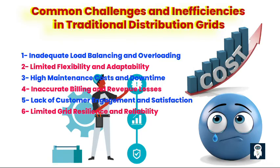Five: Lack of customer engagement and satisfaction. Traditional grids often offer limited interaction and communication channels with consumers. This lack of engagement prevents customers from actively participating in energy conservation efforts and demand response programs, impacting overall customer satisfaction.